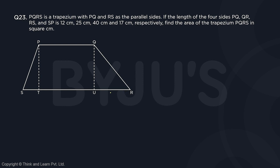QR, RS and SP are 12, QR is 25, the entire SR is going to be 40 and PS is going to be 17. Then find the area of the trapezium PQRS in square centimeter.